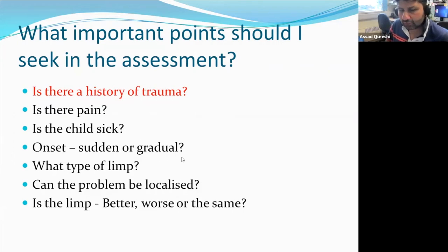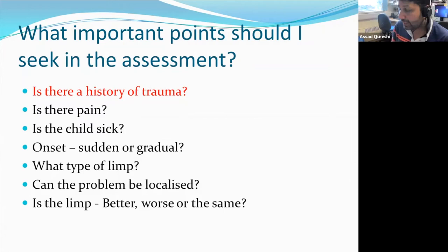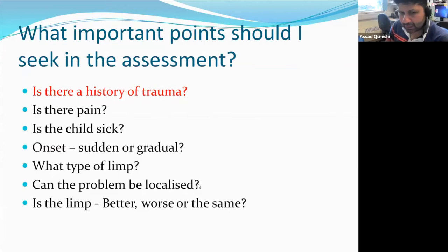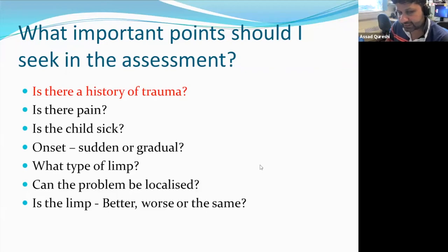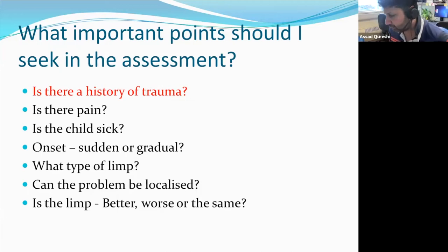Looking at the type of limp: it's important to distinguish a painful from a pain-free limp, and we shouldn't ignore the pain-free limp. Children often have amorphous symptoms, and they may localise pain incorrectly — a patient may complain of knee pain but the problem may be elsewhere. Chronicity matters too: have they got better? Did they have this a few months ago? How long has it been going on overall?